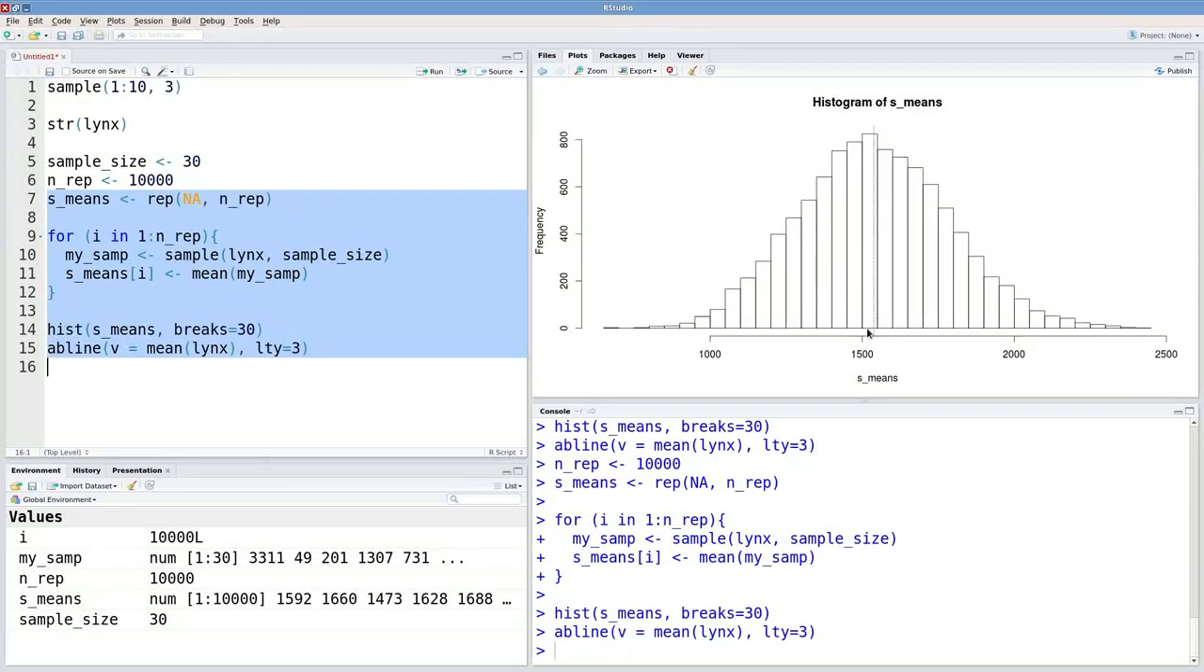What happens if we increase the number of replicate samples, say from 20 to 1,000? Then we're starting to approach a sampling distribution of means that seems somewhat normal. This is even more pronounced if we move up to 10,000 samples.